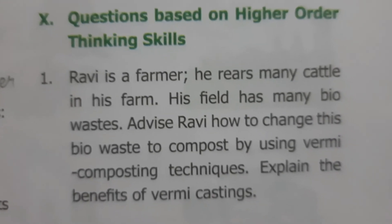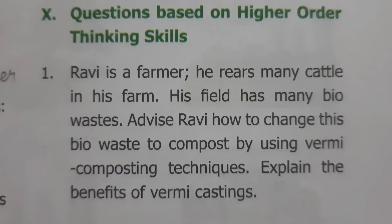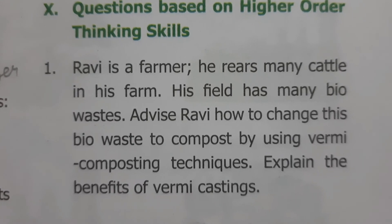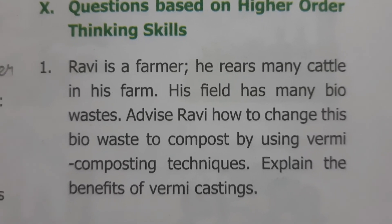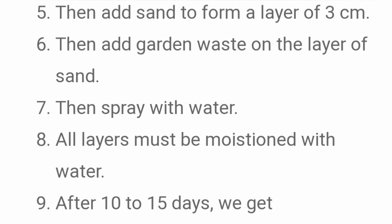Question based on higher-order thinking skills: Ravi is a farmer who has many cattle and bio-waste in his field. Advise Ravi how to change this bio-waste to compost using vermicomposting techniques. Answer: A cement tub is to be constructed to a height of 2 feet and breadth of 3 feet. Put the bio-waste in the tub with 5 cm height, add a few earthworms, then add sawdust or coir waste and husk on top.